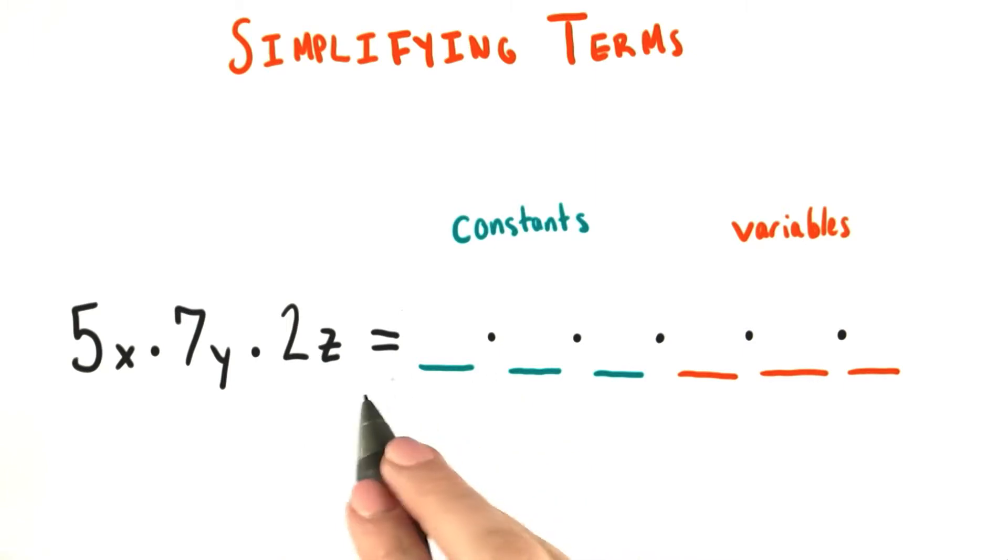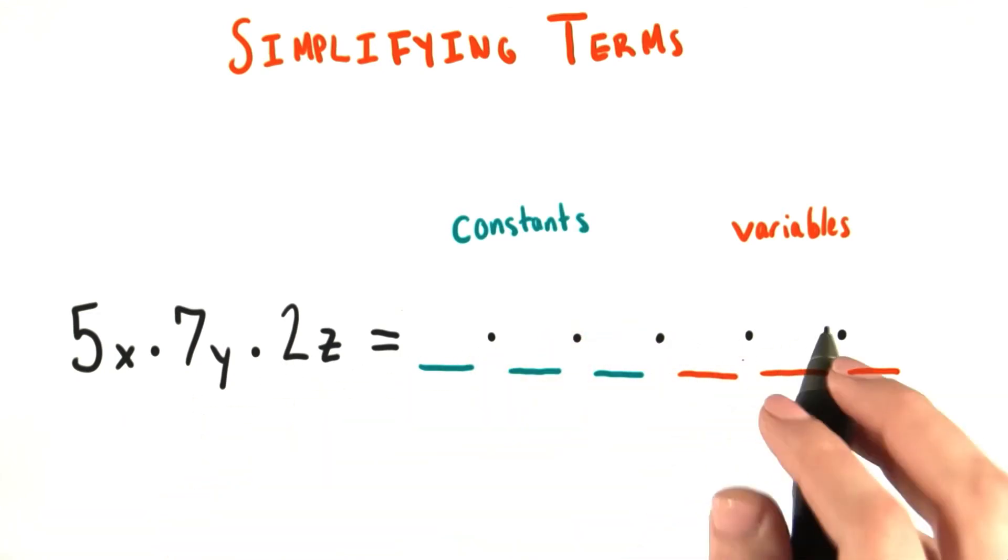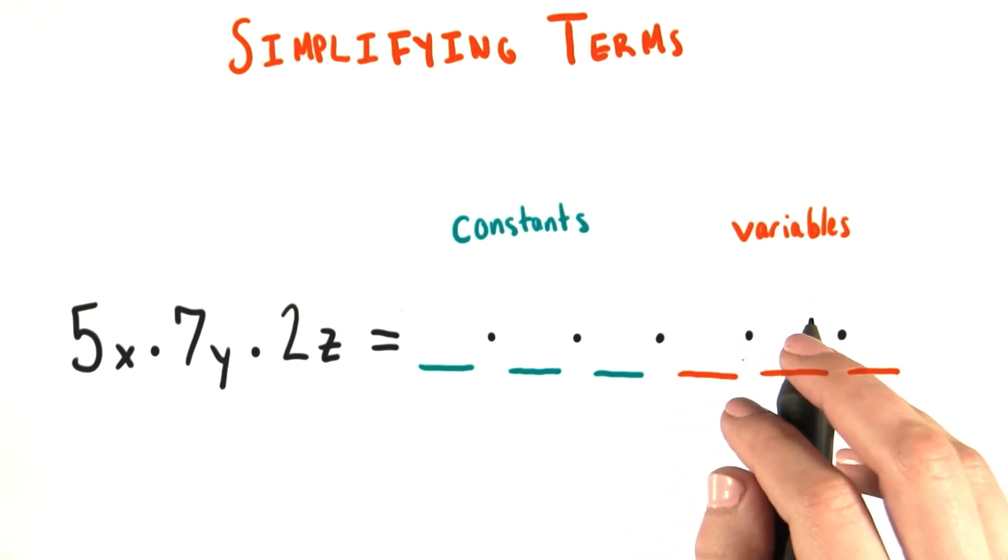So please write in these slots an equivalent version of this term by filling in each slot with either a constant or a variable. So we're just going to rearrange these terms in an order like this. Think about what answers are allowed because of the commutative property.